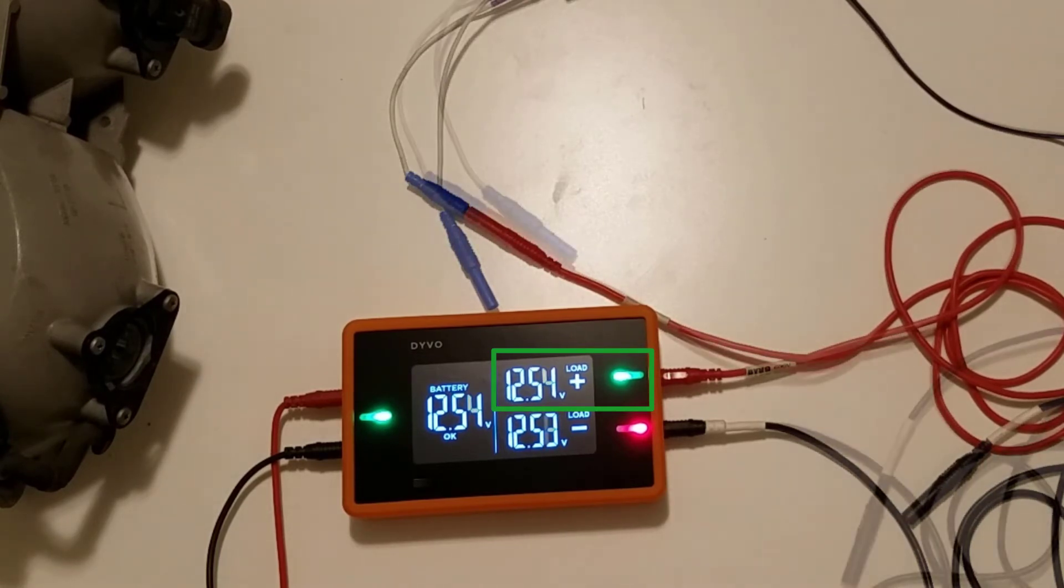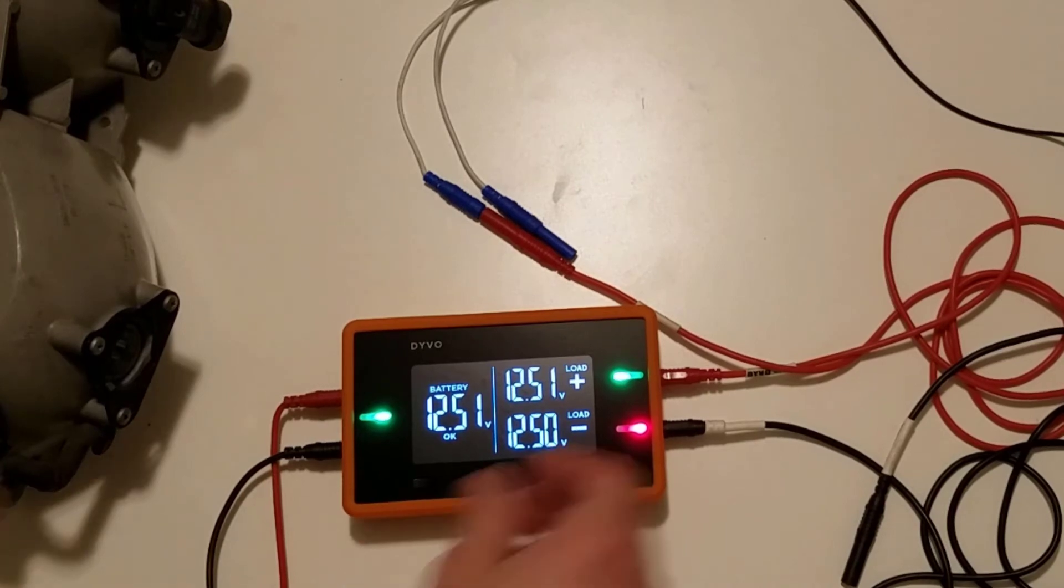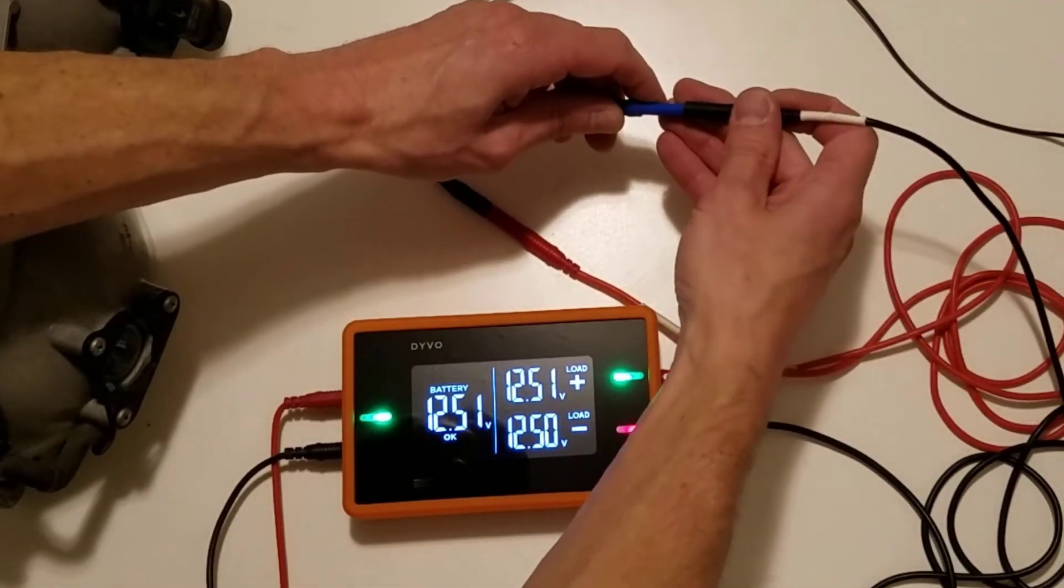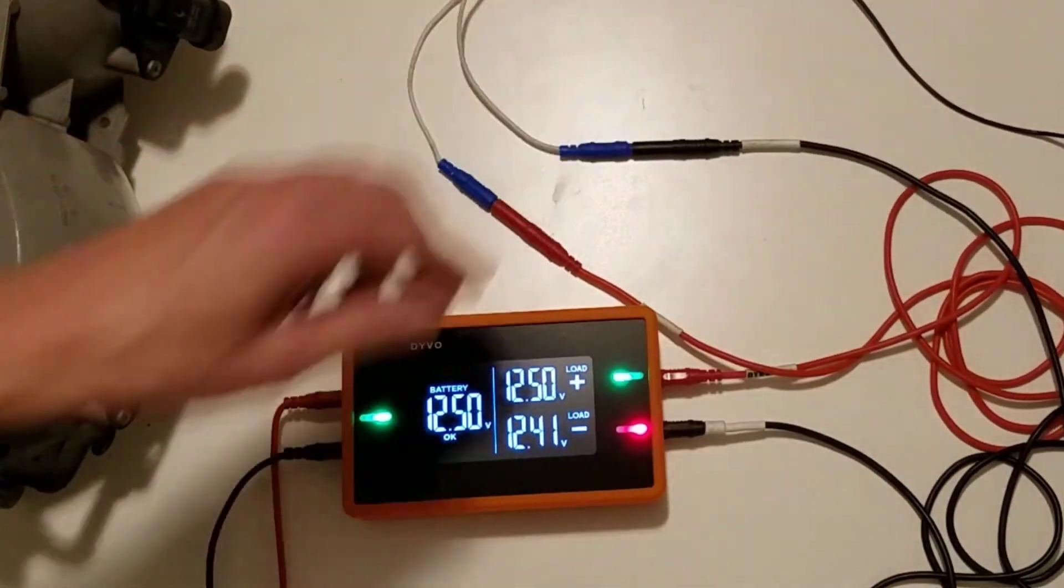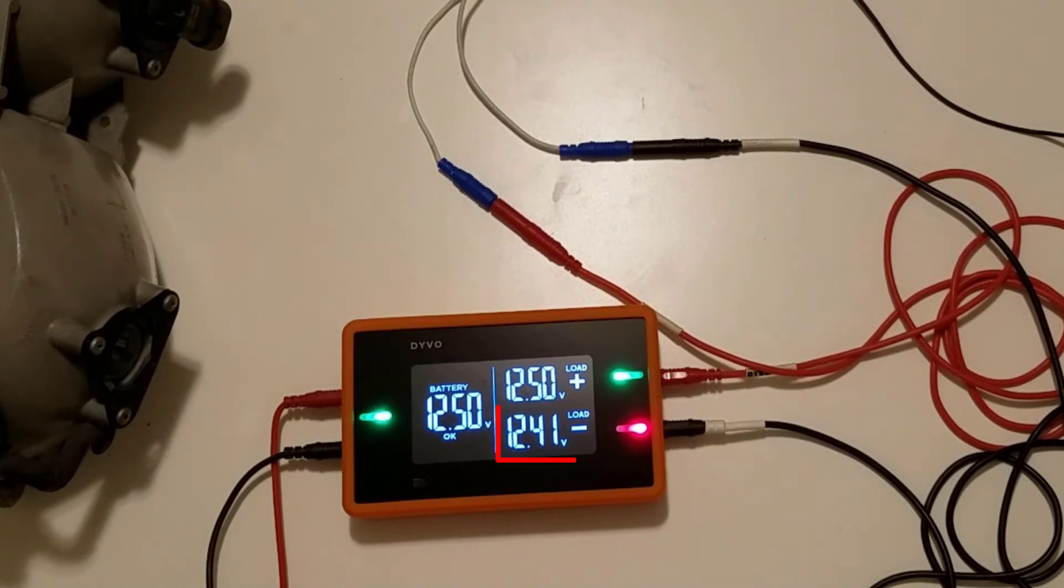Now I'm going to connect my negative test lead to the negative side of the circuit. And here I can see that circuit negative LED remained red. That tells me that I have a really high voltage loss on the ground side of my circuit, and we have 12.41 volts on the ground side.